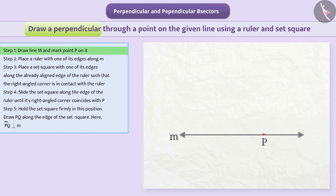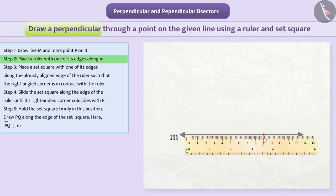Step 1: A line M and a point P are given. Note that P is on the line M. Step 2: Place a ruler with one of its edges along M. Hold this firmly.